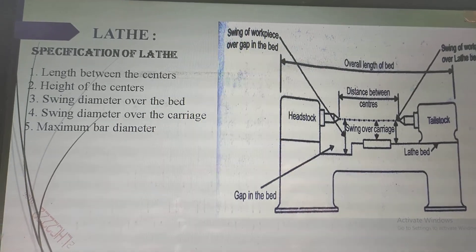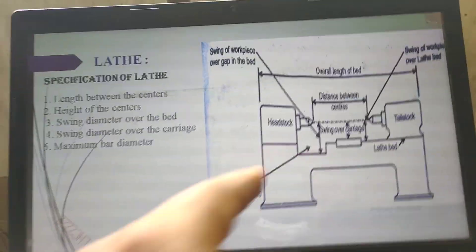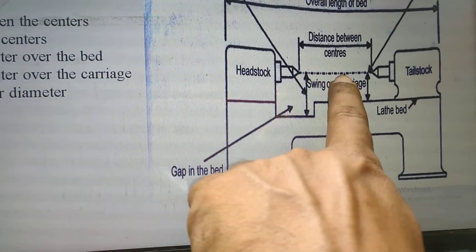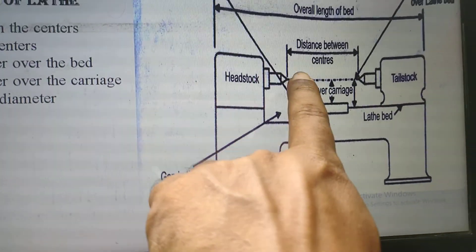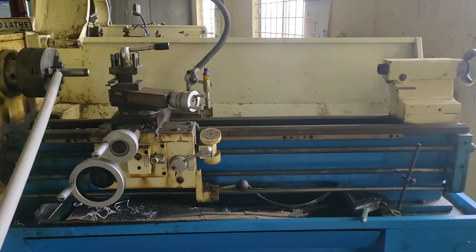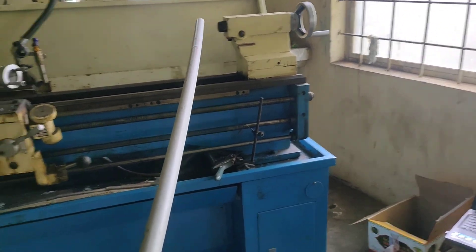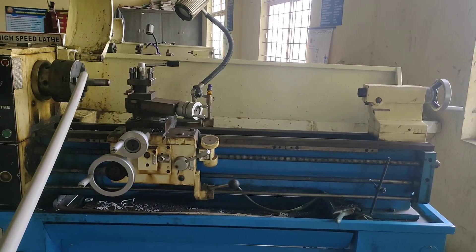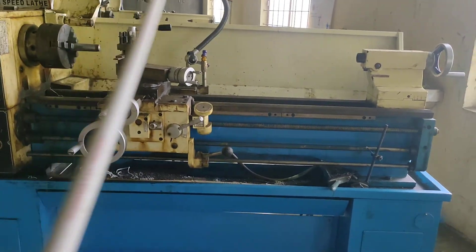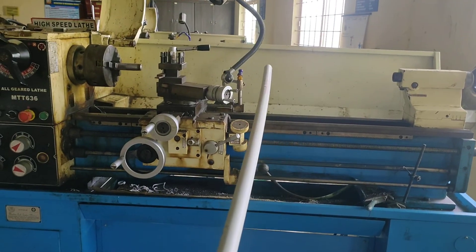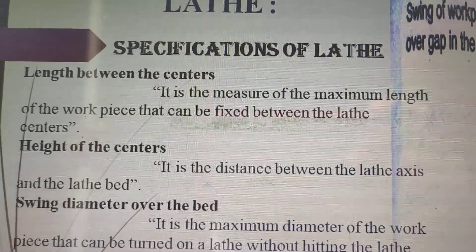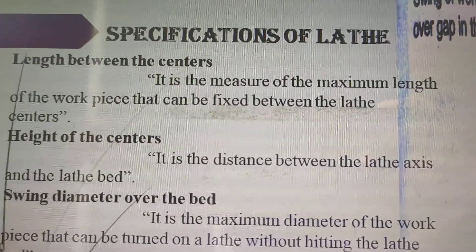Coming to the specifications of the lathe machine, we have length between centers. This is the live center, and this is the dead center — this is the length between the centers. It is the measure of the maximum length of the workpiece that can be fixed between the lathe centers.